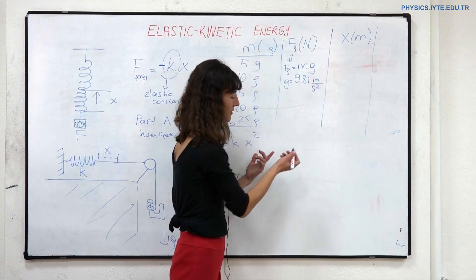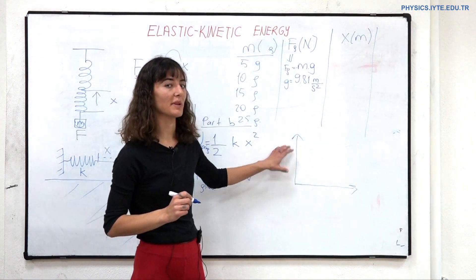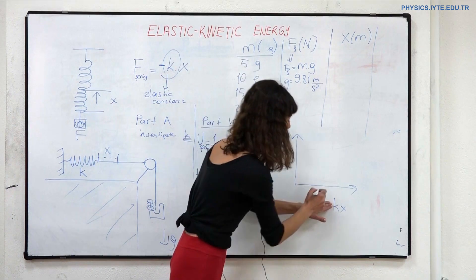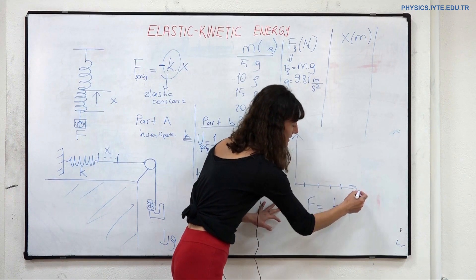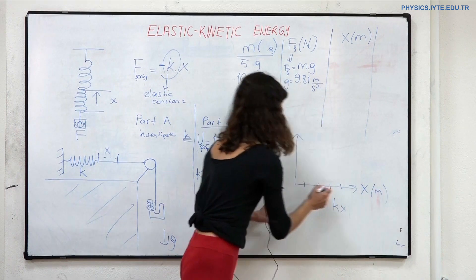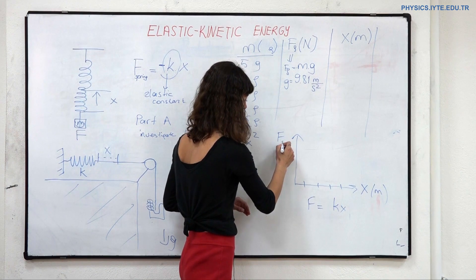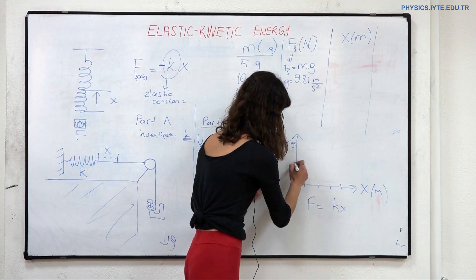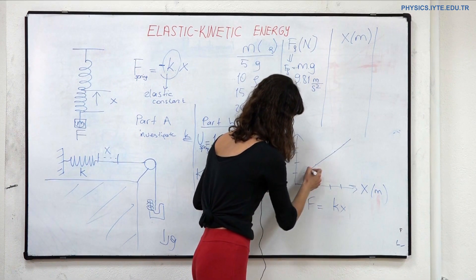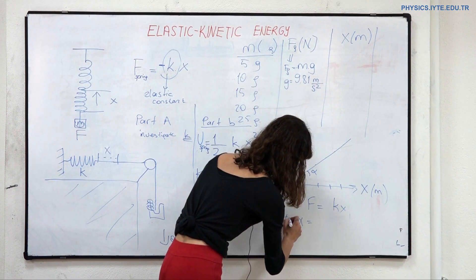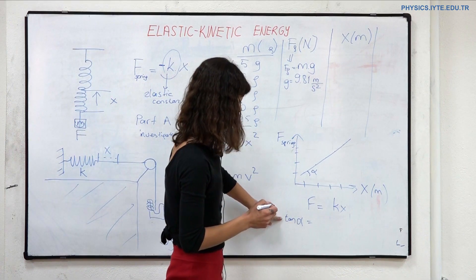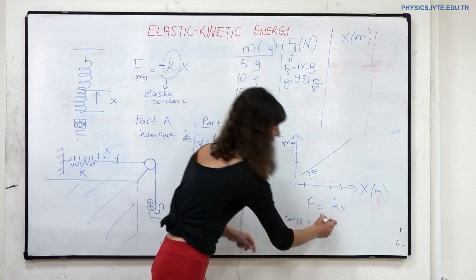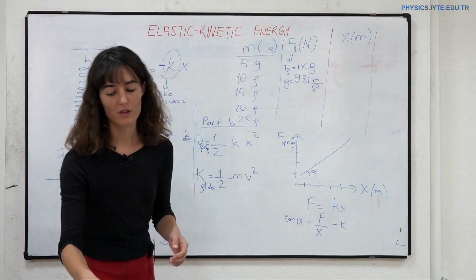To determine the spring constant, I will use the data collected during the experiment and apply Hooke's law: F = -kx. I will plot distance on one axis and spring force on the other. The slope of this graph — tangent alpha — which is force divided by distance, equals the spring constant k. Let's move on to part A to see the experiment.